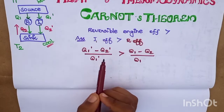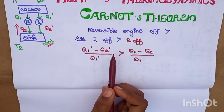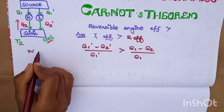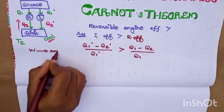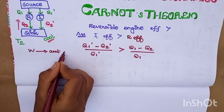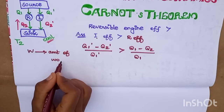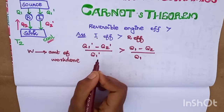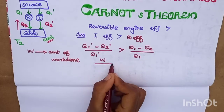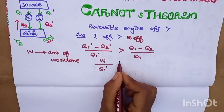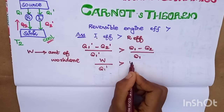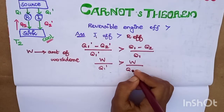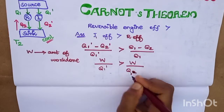W equals Q1' minus Q2', which is the amount of work done. Then W divided by Q1' is greater than W divided by Q1. So the efficiencies compare as stated.